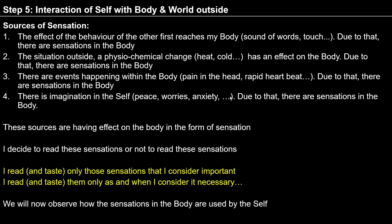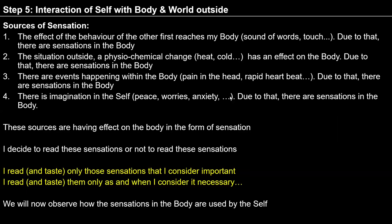How many of us are able to see the sensation because of source 2? Source 2 is some physiochemical change that has happened and affected our body — many of us are able to see that. Next: how many of us are able to see the sensation because of source 3? Something happening within my body — not because of the outside environment, not because of someone's behavior, but because some activity is taking place in the body and I am able to see it.